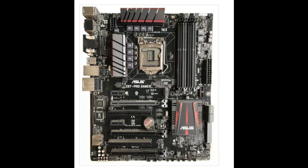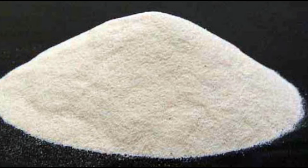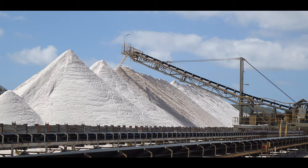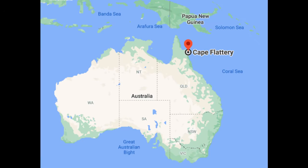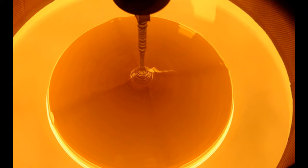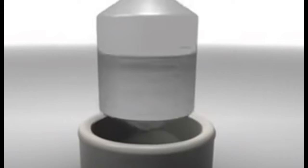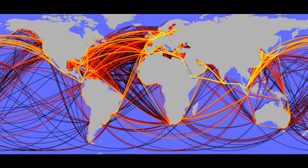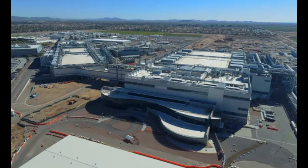An important part for computers is sand, or silicon dioxide. One of the main locations where silicon dioxide is mined is in Cape Flattery, Australia. Silicon is derived from quartzite. Quartz is melted and crystallized by seed crystals, then pulled out into a long cylinder and cut by diamond saws into wafers. These are then distributed to various factories for making different computer components.